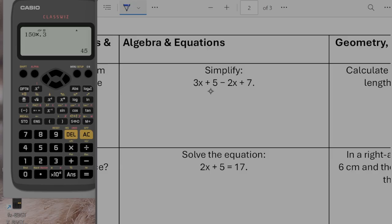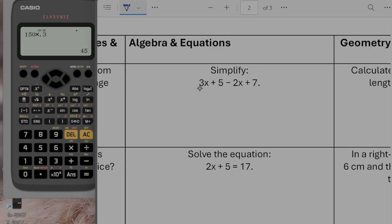Okay. Simplify 3x plus 5 minus 2x plus 7. So we're going to collect our x terms together. So 3x minus 2x is going to give us x. And then we collect our numbers. So plus 5 plus 7 is going to be plus 12.